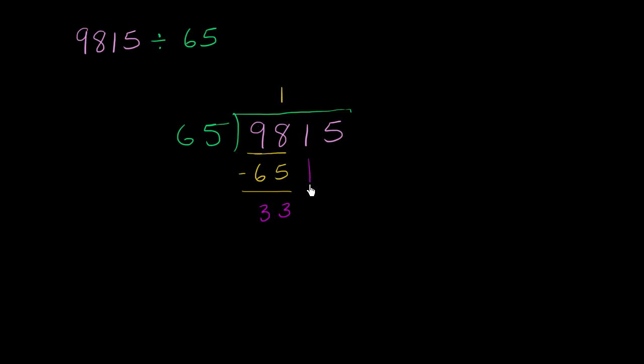And now we can bring down the next digit, this 1 here. And now this is where the art is going to come into play, because we need to figure out how many times does 65 go into 331 without going over it. And you might just try to look at these numbers, try to approximate them a little bit.